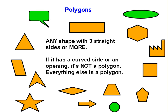All the orange ones are polygons and the green ones are not polygons. This has three sides, that's three or more, so that's a polygon. This one right here has some curves on it, and so that is not a polygon.